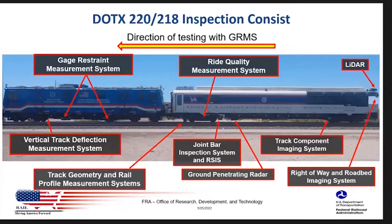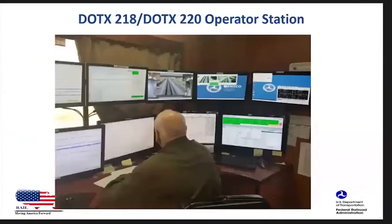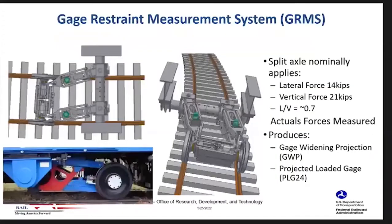The last three systems are machine vision based. This is a view from the operator station inside the 220 car. I'm going to talk about each of those systems — I'll skip track geometry and rail profile since we heard a lot about those yesterday — and touch on the GRMS system.